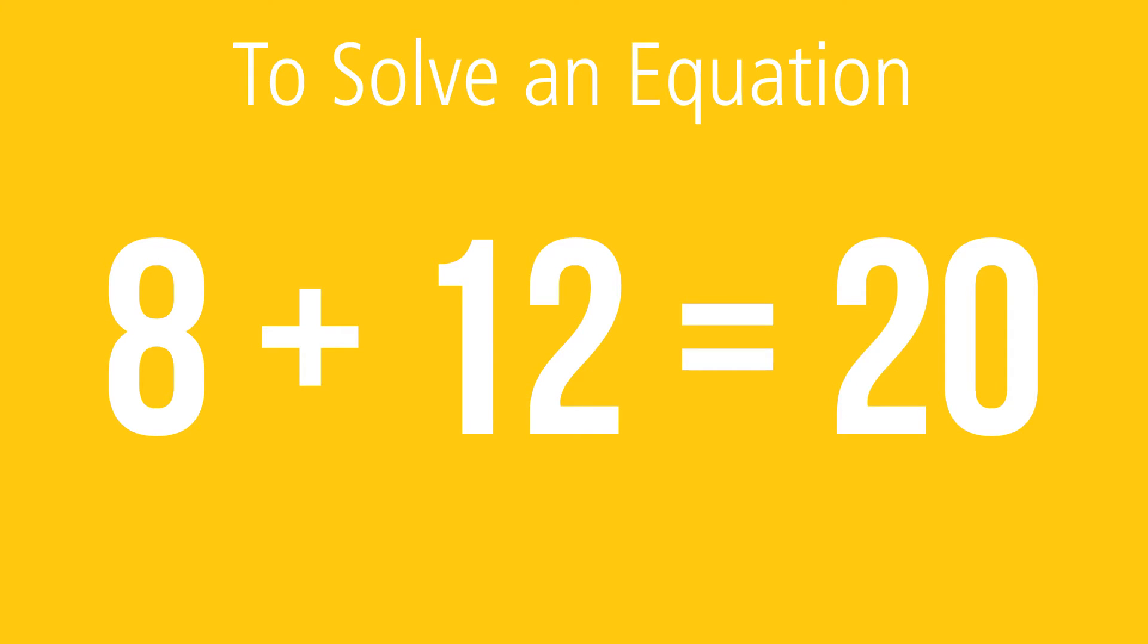By substituting 8 for the variable S, we have found the value of the unknown that satisfies the equation and makes it true: 20 equals 20. The numerical value of the variable that makes the equation true, in this case 8, is known as the solution or root of the equation.